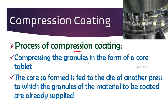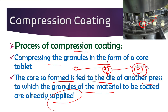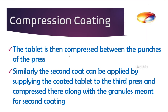The process of compression coating is as follows: first, a core tablet is made by compression. The core tablet is then fed to the die of another press, to which the granules of the material to be coated are already supplied. Compression takes place with the next incompatible material. This tablet then passes to another die where granules of another incompatible material are supplied, giving a third coating. This repeated compression and repeated coating takes place using different dies.